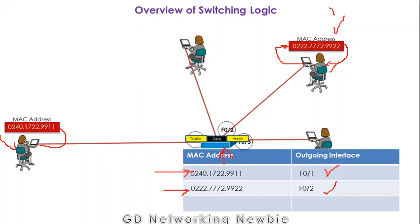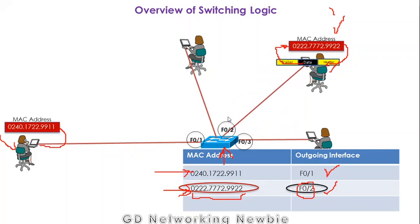When the switch receives the frame, it looks into its MAC table to find the destination address. By looking at the destination address, the switch finds out which port the required node is connected to, and then forwards that frame to the required destination. The switch maintains a database called the MAC table. By looking at the destination MAC address and the port number in the MAC table, the switch forwards the packet to the required destination. This is how a switch forwards a frame.